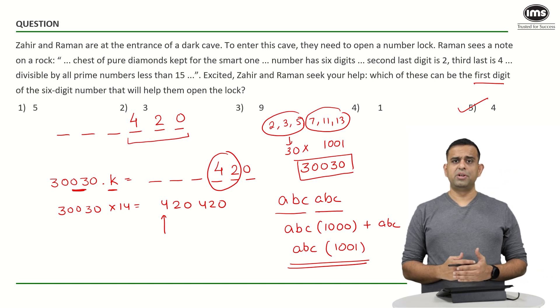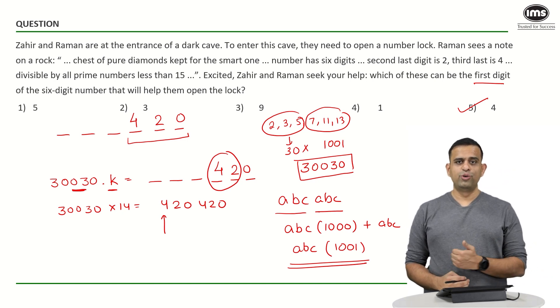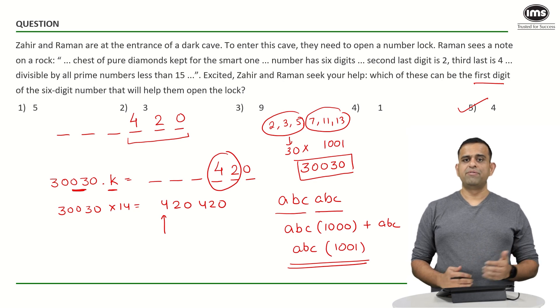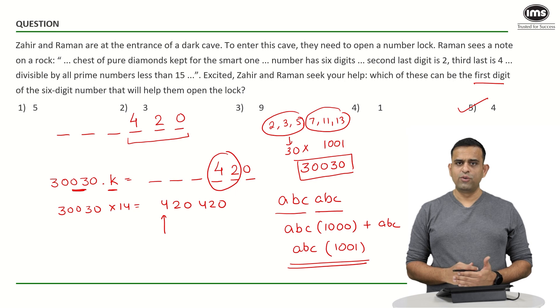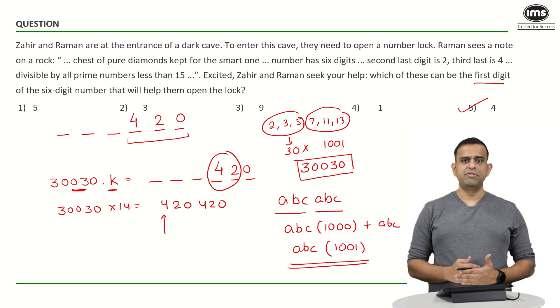So one can say it has to be 420420 since the last three are known to me from the given fact. So ultimately my answer becomes option number 5 which is 4 is my first digit on the left hand side 420 and 420.